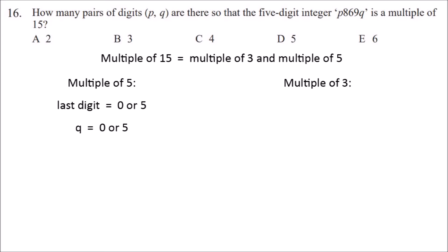Now to be a multiple of 3, all the digits added together must equal a multiple of 3. The digits we already have, 8, 6, and 9, add to 23.